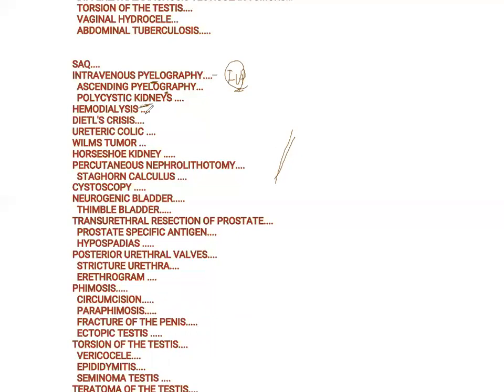Hemodialysis is used when the kidneys go into failure — the blood is filtered through a dialysis machine. Ureteric colic is because of a stone in the ureter and can produce colicky pain.